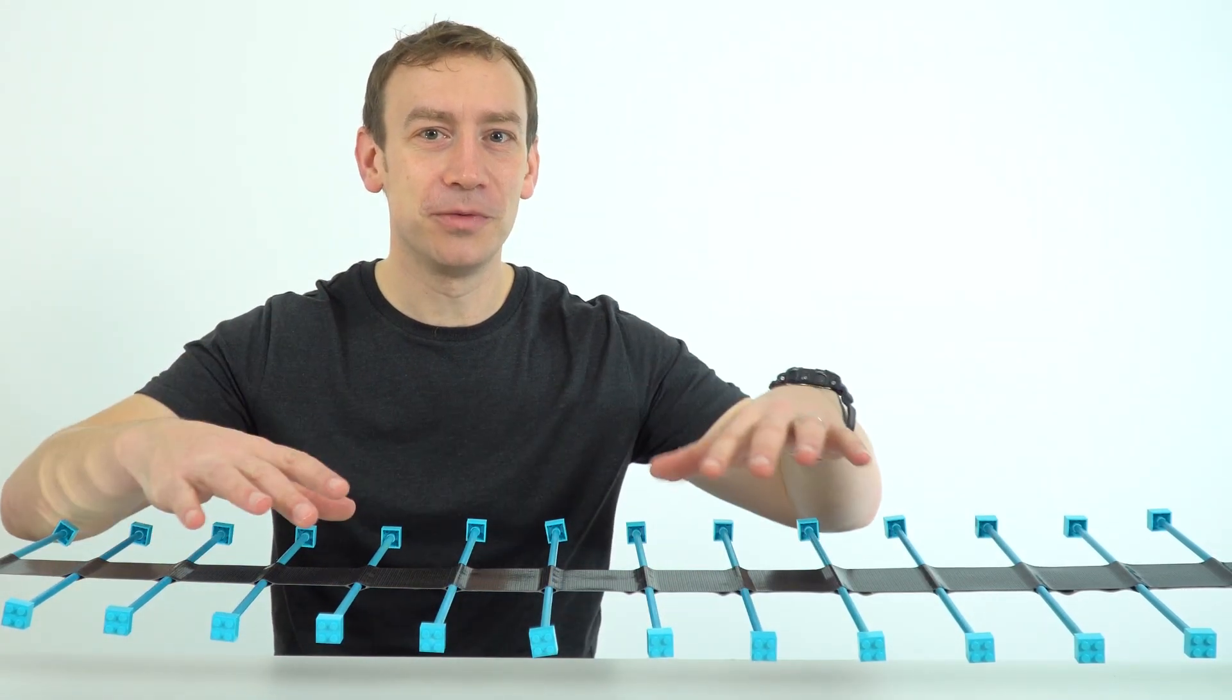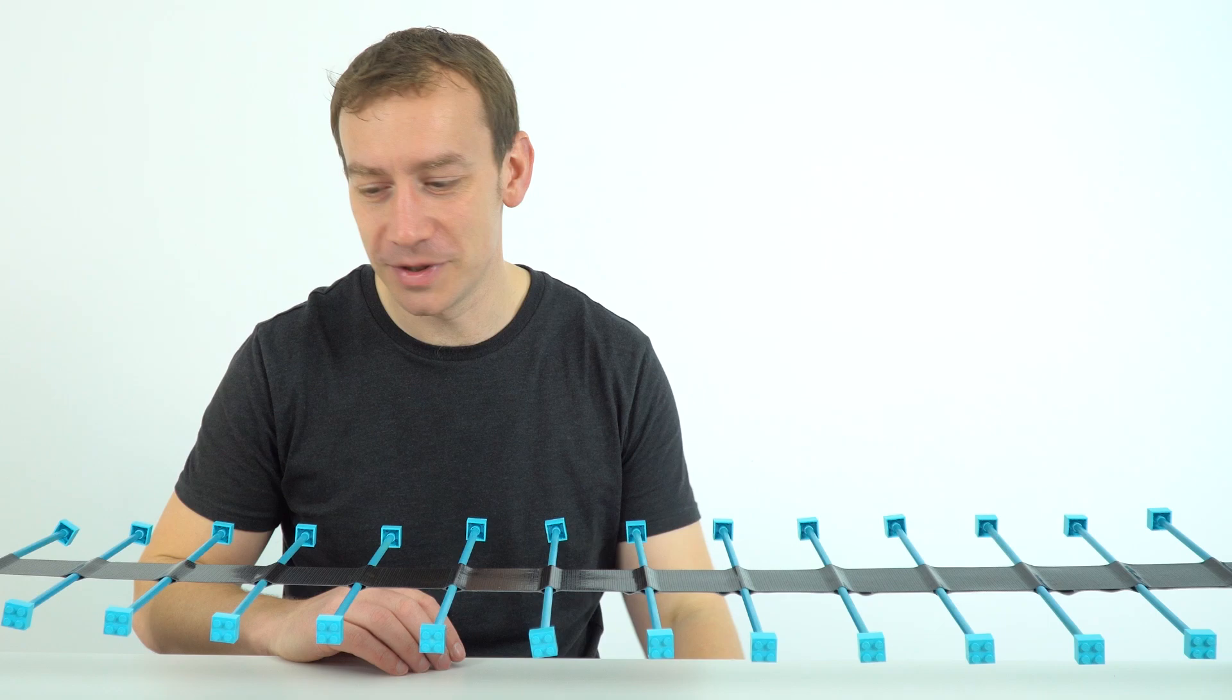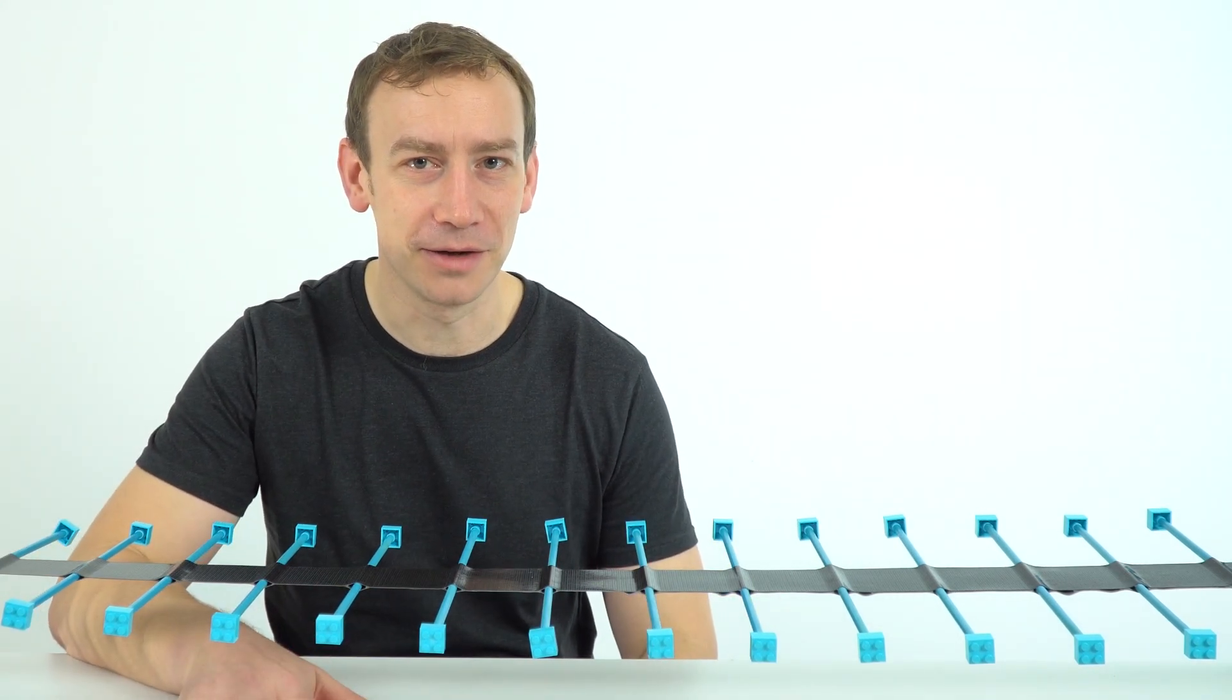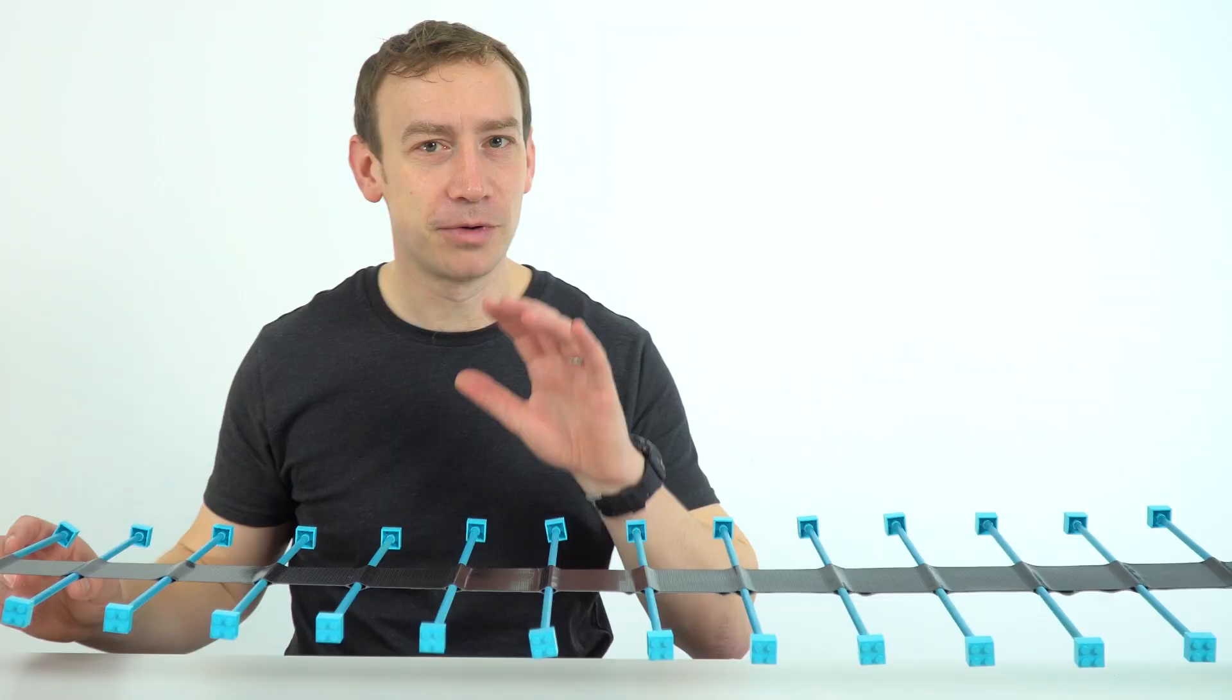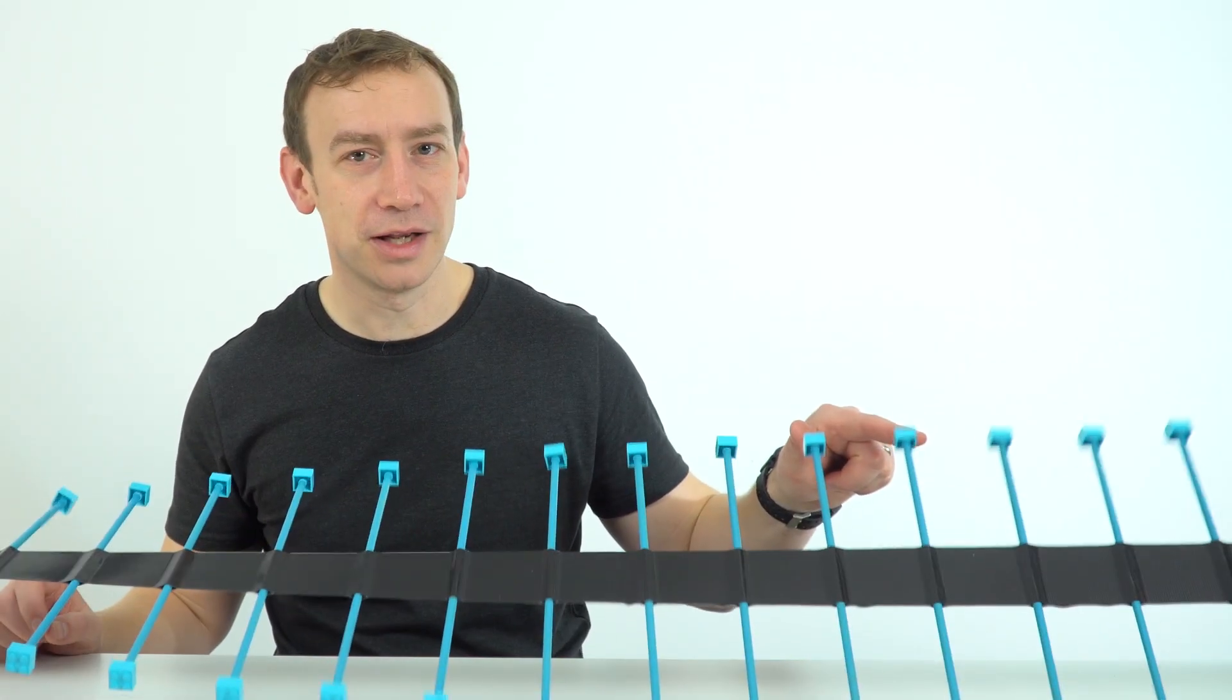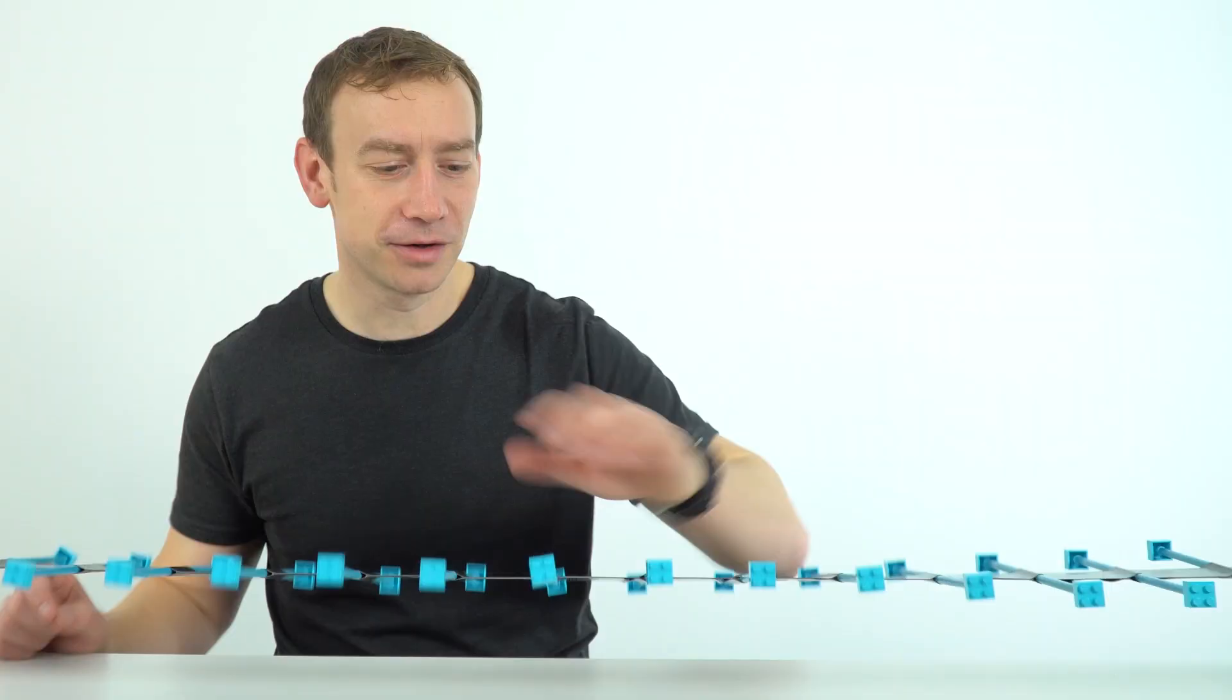This one here is really useful because it can show lots of wave properties because what waves do is they transfer energy from place to place. This is a progressive wave and that means that energy is transferred from one place to another without actually transferring the particles.